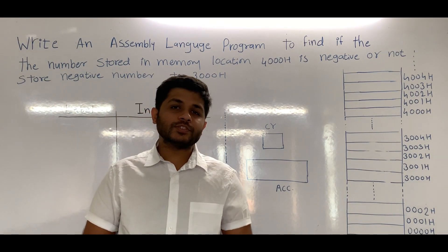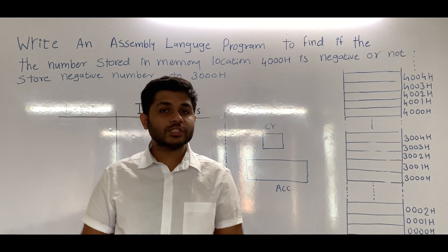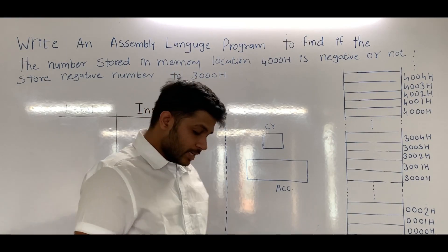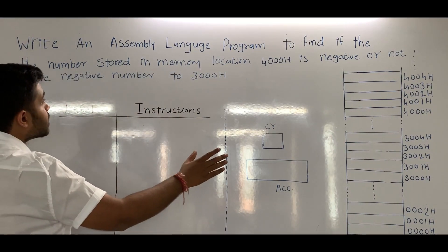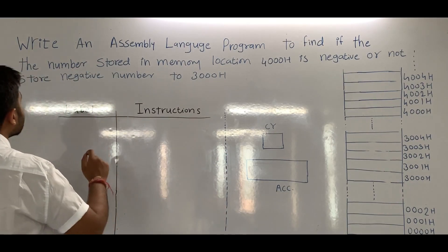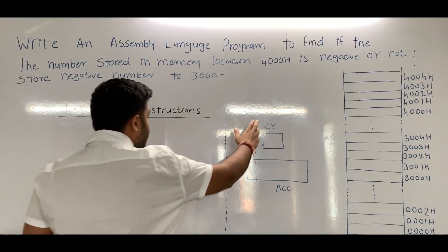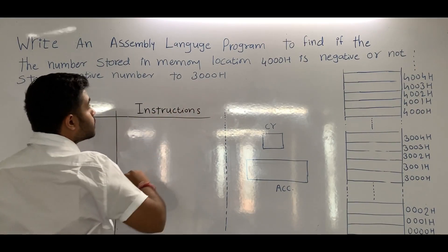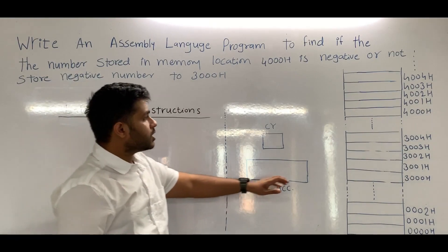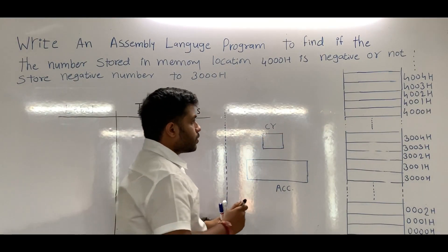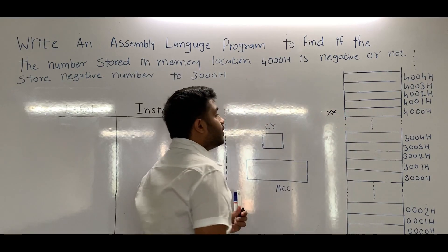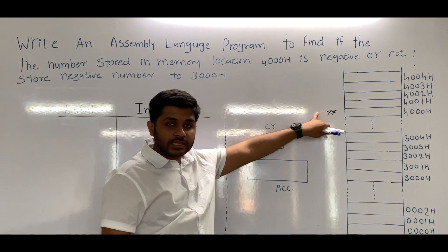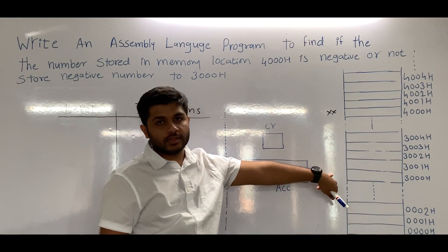Hi everyone, today we are going to see one 8085 assembly language program to find whether a number is positive or negative. The question is: write an 8085 assembly language program to find if the number stored in memory location 4000H is negative or not. If the number is negative, store the negative number to 3000H. So in 4000H some data is stored, and we have to find whether that data is negative or not. If it is negative, we move it to 3000H.